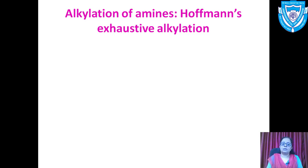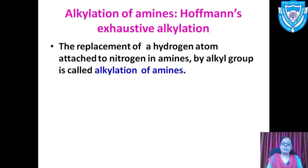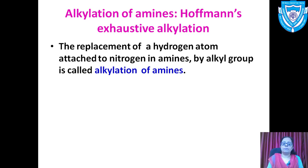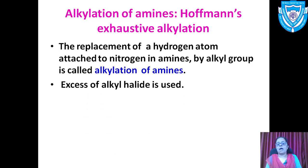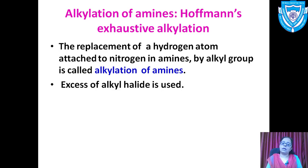In alkylation of amines, the replacement of a hydrogen atom attached to nitrogen in an amine by an alkyl group is called alkylation of amines. The structure of a primary amine is RNH₂. The hydrogen attached to nitrogen is replaced by an alkyl group. Since excess alkyl halide is used and is exhausted, we call it exhaustive alkylation.